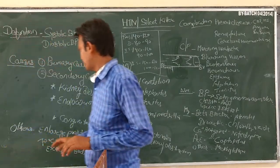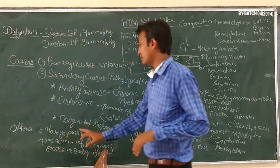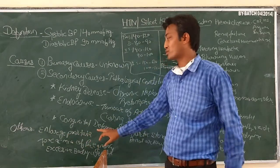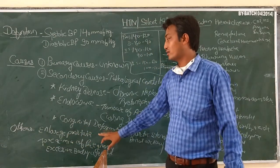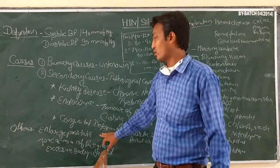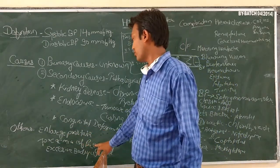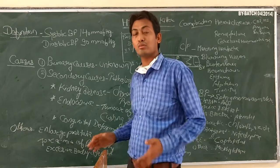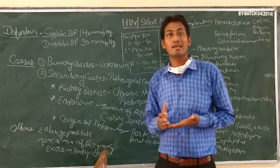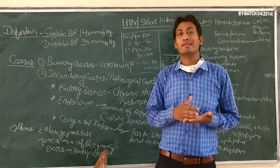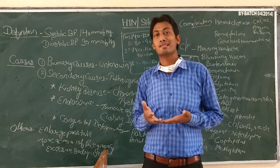Hypertension is associated with kidney disease. Other complications include toxemia of pregnancy, which occurs in the second stage.